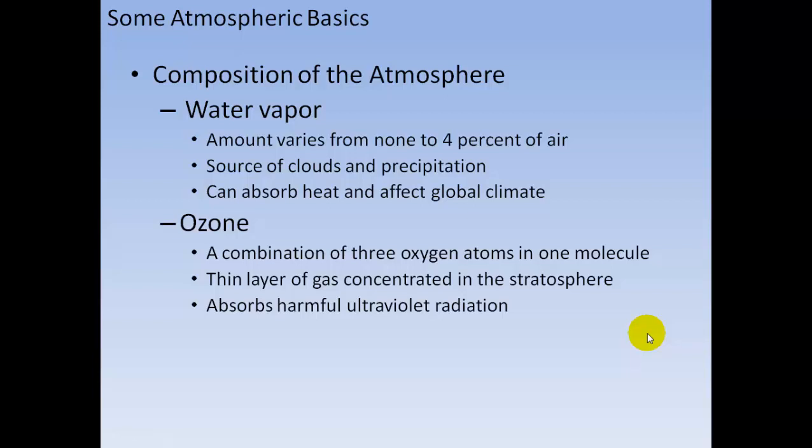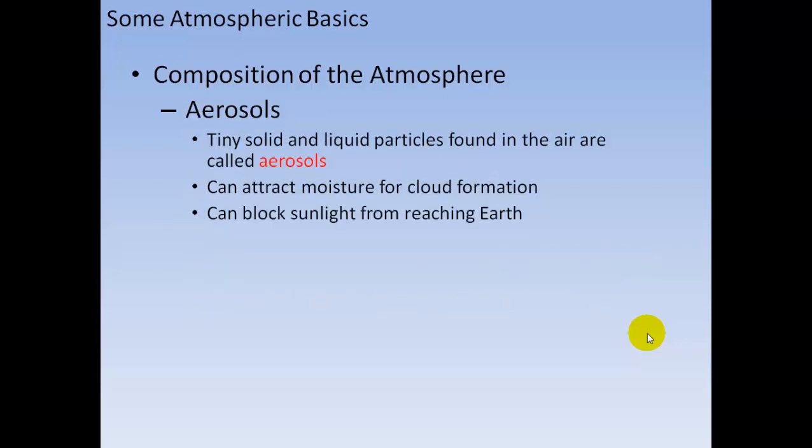There's also water vapor in the atmosphere — amounts vary from no water vapor to 4% of air. It's a source of clouds and precipitation and can absorb heat and affect global climate. Ozone is a combination of three oxygen atoms in one molecule, a thin layer of gas concentrated in the stratosphere that absorbs harmful ultraviolet radiation. Aerosols are tiny solid and liquid particles found in the air; they can attract moisture for cloud formation and also block sunlight from reaching Earth.